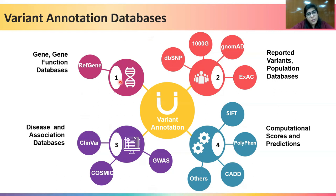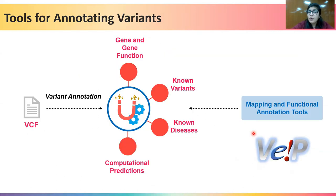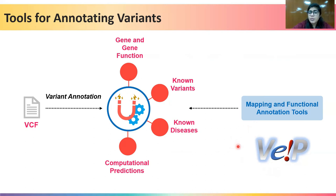We already know about the Variant Effect Predictor tool, which can annotate the list of variants by extracting relevant information from all these databases. By using this tool, we can get the variant list along with its annotation features.